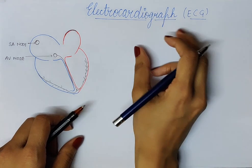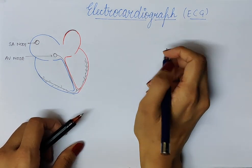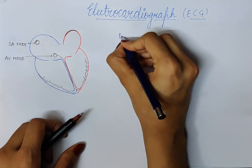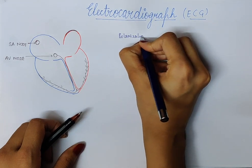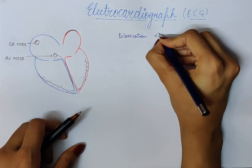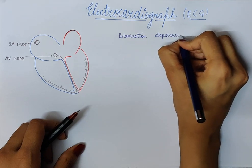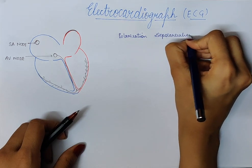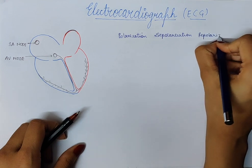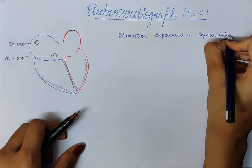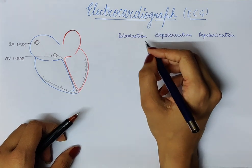In ECG, you have to remember three terms known as polarization, depolarization, and repolarization. These three terms are very important if you want to learn about ECG.